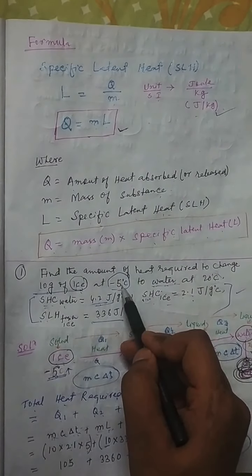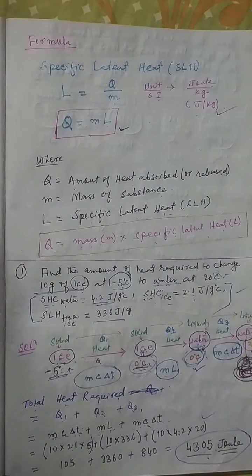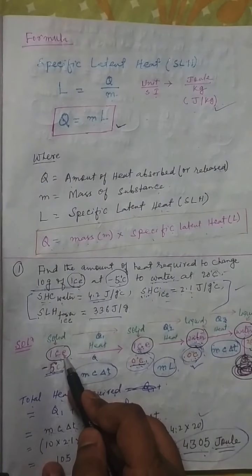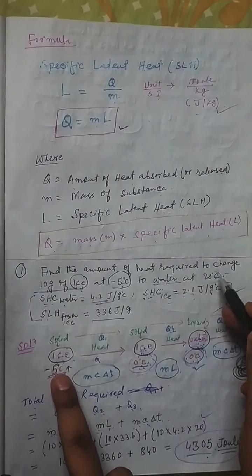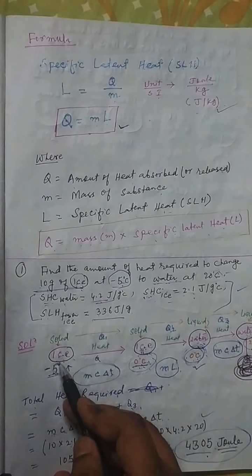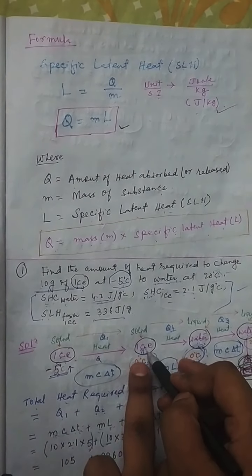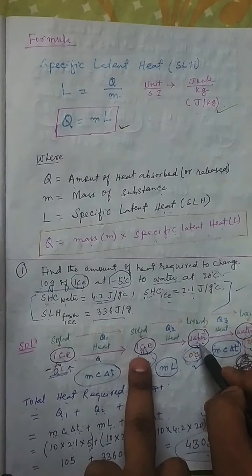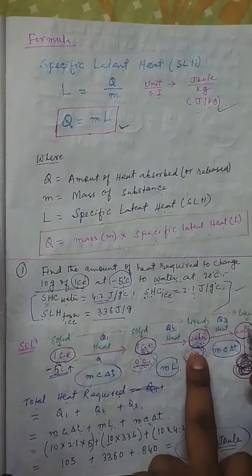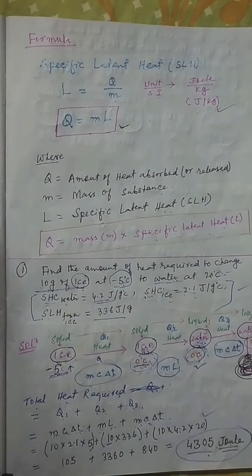This is the amount of heat required to change 10 grams of ice at minus 5 degrees centigrade into water at 20 degrees centigrade. Remember: ice is not directly converted to 20 degrees. First, it comes to 0 degrees, then the ice converts into water at 0 degrees, and then the water's temperature rises to 20 degrees centigrade. If you understand this, you will be able to solve all problems in this chapter.